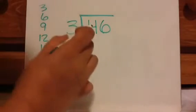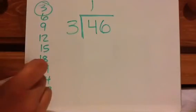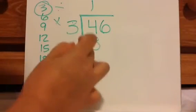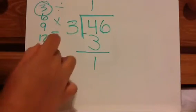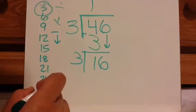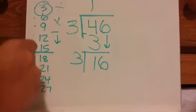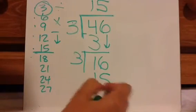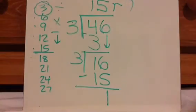Let's do another one. 3 goes into 4 — the closest to 4 without going over is 3, so it'll only go in one time. That's my division. My multiplication: 3 times 1 is 3. Subtract: 4 minus 3 is 1. The next step is bring down that 6, and now you have to do 3 goes into 16. The closest to 16 is 15, so 1, 2, 3, 4, 5 times — that would be 15. 16 minus 15 is 1. So my answer is 15 remainder 1.